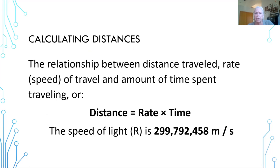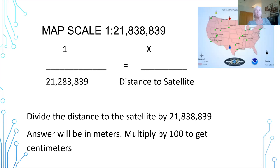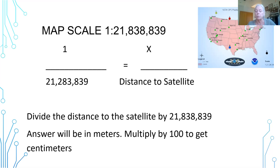First of all, we've got to calculate the distance. That is the relationship between the distance traveled and the rate — which is the speed of light — and the amount of time spent traveling. So the distance between that satellite and Sadie is the rate (speed of light) times the time, and that time was given to you in seconds. We're looking at a map scale here that is not real life. The map scale on this particular map is 1 to 21,838,839. In order to convert the number you're getting to match your map, you divide the distance to the satellite by that map scale, and the answer will be in meters. You then multiply that by 100 to get centimeters, and that's the number you will use on your paper map.